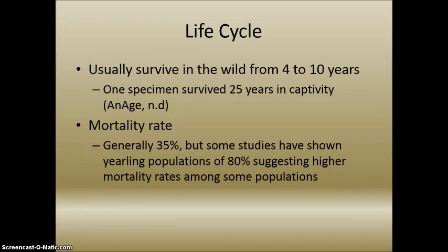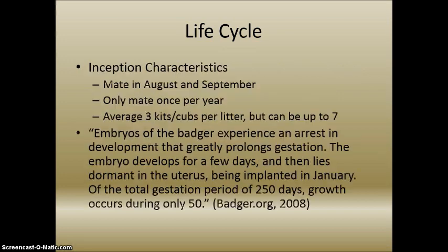In its life cycle, they usually survive in the wild from four to ten years, but one specimen in captivity was able to live up to 25 years according to NIH. Mortality rate is generally about 35%, but some studies have shown yearling populations in some demographics show 80%, suggesting a higher mortality rate among older individuals in the population.